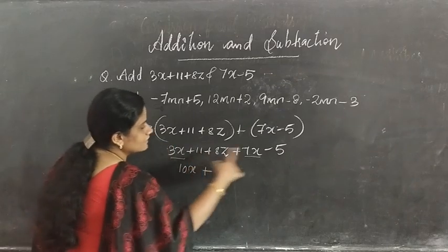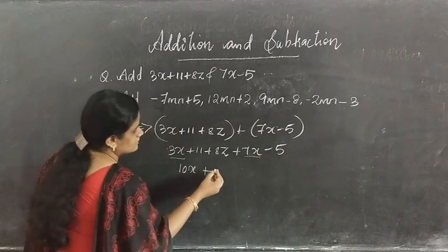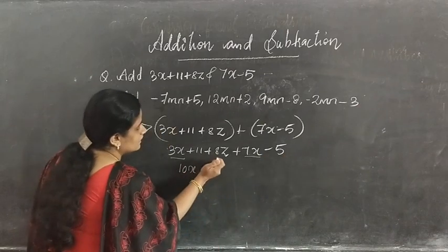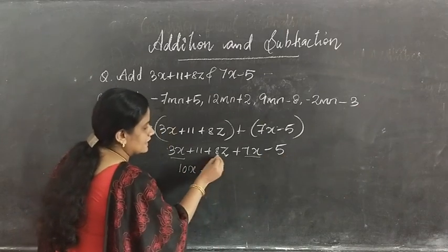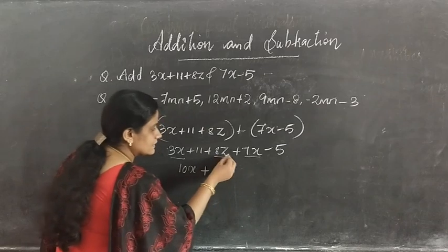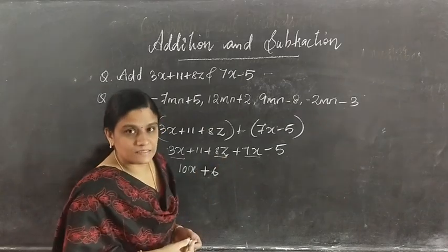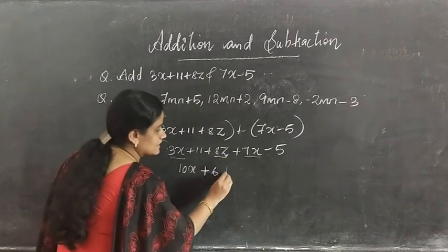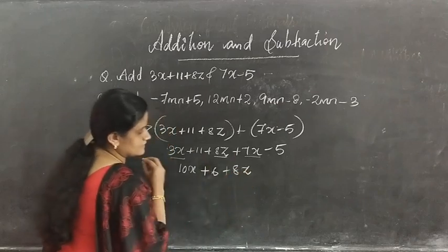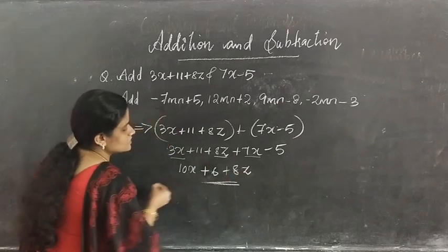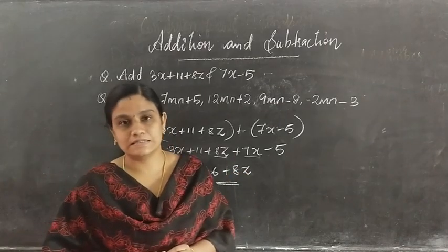Plus 11 minus 5 gives plus 6. Then 8z — it is an unlike term, so we leave it as it is: plus 8z. So 10x plus 6 plus 8z is the answer.